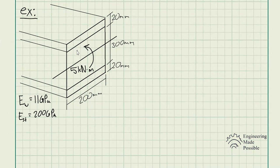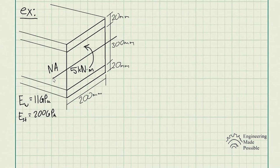In this case we have a composite beam. In the center the material is made of wood, and the top and bottom are steel plates with a moment of 5 kNm being applied. We have a symmetric cross-sectional area, so the neutral axis is determined just by the dimensions — it's going to be half of the total height. That's where the neutral axis is going to be.